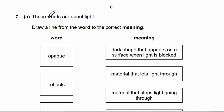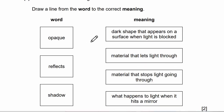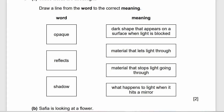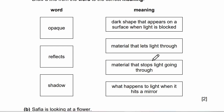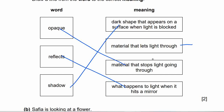Now we are in question 7: these words are about light. Draw a line from the words to the correct meaning. Shadow — dark shape that appears on a surface when light is blocked. Transparent — material that lets light pass through. Opaque — material that stops light going through. Reflect — what happens to light when it hits a mirror. That's our answer.